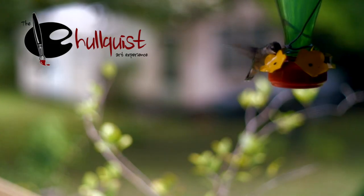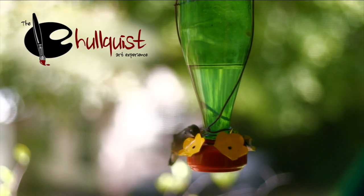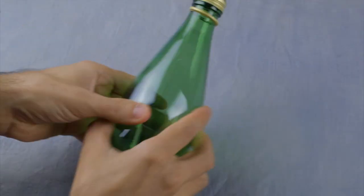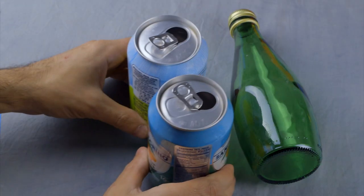In this video I'll show you how to make an attractive hummingbird feeder out of some discarded bottles and cans. You will need a bottle with a screw-on cap, two aluminum cans,